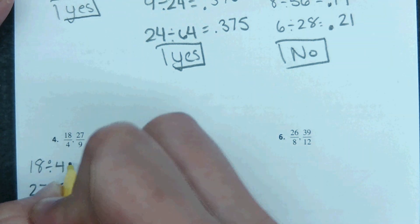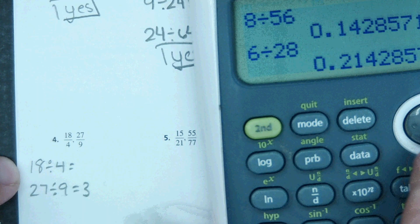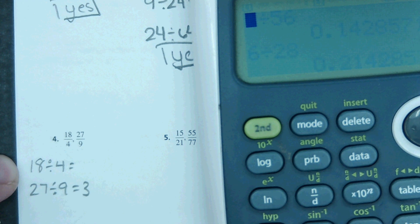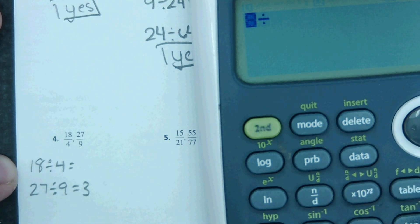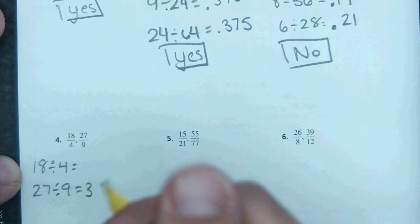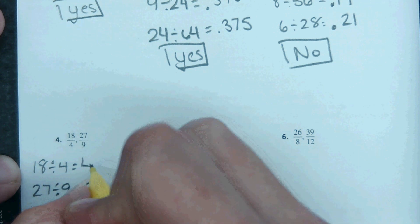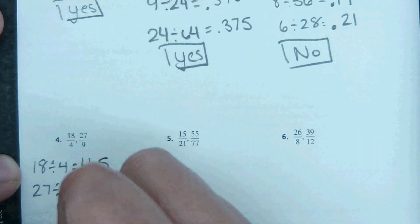So for 4 through 6, repeating that same process: 18 divided by 4, 27 divided by 9. I can do this one in my head, that just comes out to 3. And I know 18 divided by 4 isn't going to come out to 3. It comes out to 4.5. So since these divide to two different numbers, it's a no.